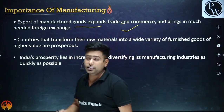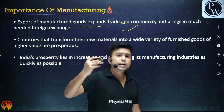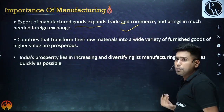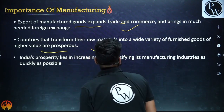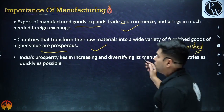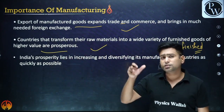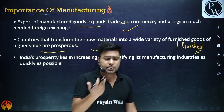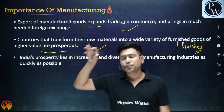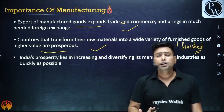Export of manufactured goods expands trade and commerce and brings in much-needed foreign exchange. Countries that transform raw materials into a wide variety of finished goods are very prosperous. Take the example of Japan — devoid of natural resources, yet it worked on human resources and fine finished products. China's economy has boomed because of its success in the manufacturing sector, investing in human resources and bulk production.